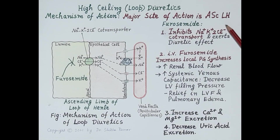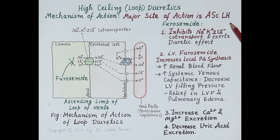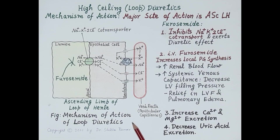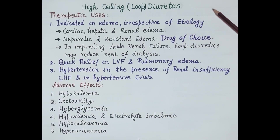Other loop diuretics exhibit the same mechanism of action. Bumetanide is 40 times more potent than furosemide and is used in cases not responding to or not tolerating furosemide. Torsemide is three times more potent than furosemide.